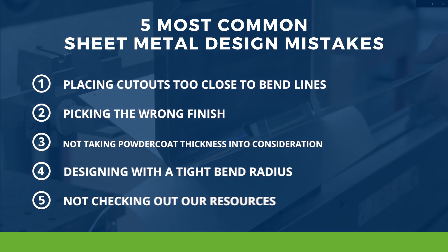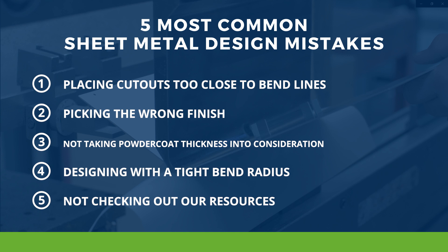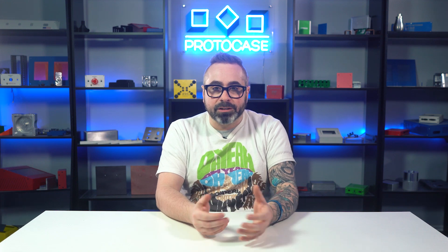To start off, common mistake number one: placing cutouts too close to the bend line. This is definitely a common mistake that we see quite frequently. If you violate our minimum bend rules and place cutouts too close to the bend, then your cutout may stretch or flare out when the sides get bent by our press brakes or LVD machines. This can cause serious issues, particularly if you are trying to fit components inside of a cutout.